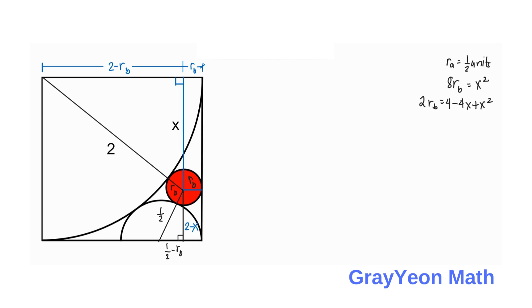Expanding and simplifying that equation, the 1/4 terms and R_B squared terms cancel, leaving 2·R_B = 4 - 4x + x².